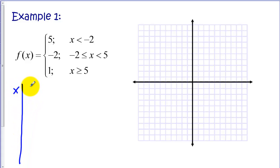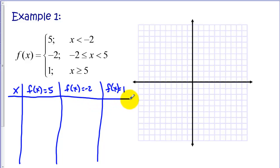And I'm going to put a column for each rule, so f(x) = 5, f(x) = -2, and our third rule f(x) = 1. And now we have to pick a set of x values. Now we want to put the boundaries in the table, so we need to put in our table at least -2 and positive 5.